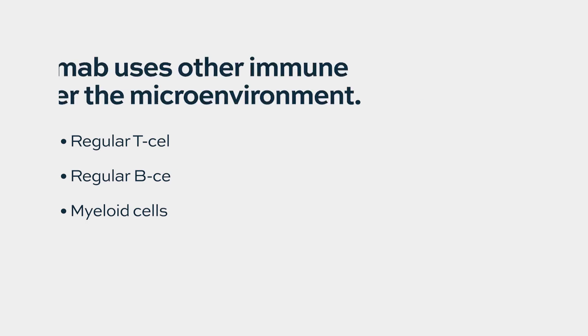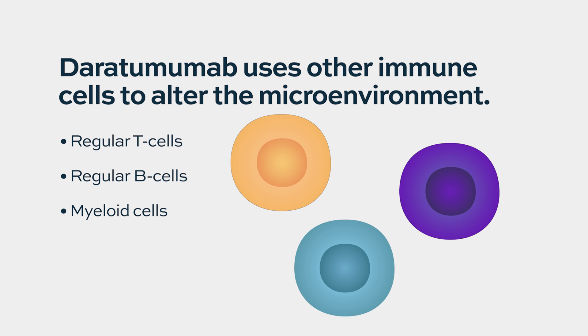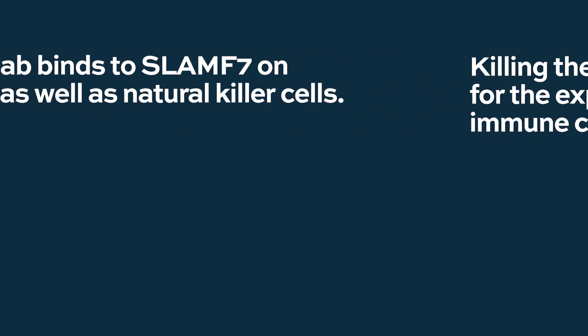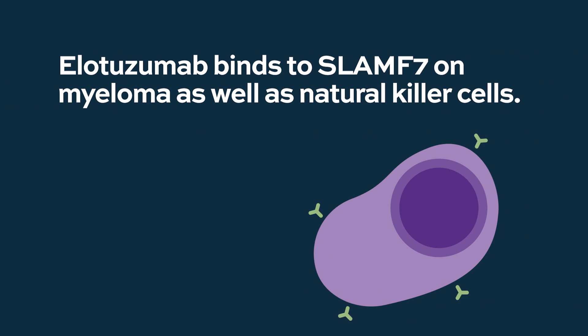Daratumumab may also work by altering the immune microenvironment. It depletes regulatory T-cells, regulatory B-cells, and regulatory myeloid cells — immune cell populations within the myeloma microenvironment that promote myeloma growth. Eliminating these cells can further kill off myeloma cells and allows for an expansion of beneficial immune cells that help control myeloma as well.